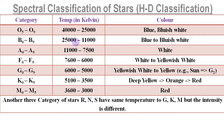That means 25,000 Kelvin temperature belongs to B0 star, and 11,000 Kelvin temperature belongs to B9 star. Similarly, 40,000 Kelvin temperature belongs to O5 star and 25,000 Kelvin belongs to O9 star. We should note that O category starts with O5 instead of O0 like other categories. The reason is that temperature higher than 40,000 Kelvin was not found, but may exist. Hence, O category star starts from O5.